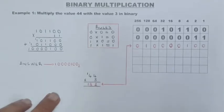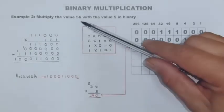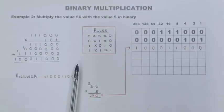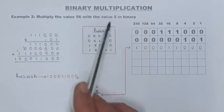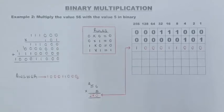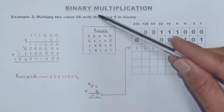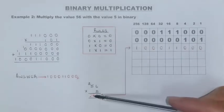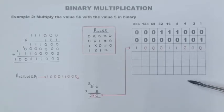Let's go to the second example: multiplying 56 by 5. In the first example the multiplier had two digits only. In this second example, the binary number for 5 has three digits. Again, put it into your code system to find the binary values of 56 and 5. Then multiply 56 by 5, get your answer, put it into the code system to find the binary value so you know what result to expect.